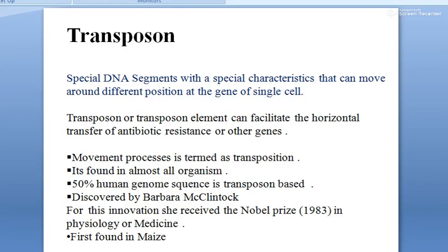Hello everyone, welcome to Capsule. Today's topic is transposons, or jumping genes. A transposon is a special DNA segment with a special characteristic — it can move around to different positions within the genome of a single cell. Because they have a tendency to move from one portion to another position, transposons are also called jumping genes. They are movable genetic sequences that can facilitate horizontal transfer of antibiotic resistance or other genes.